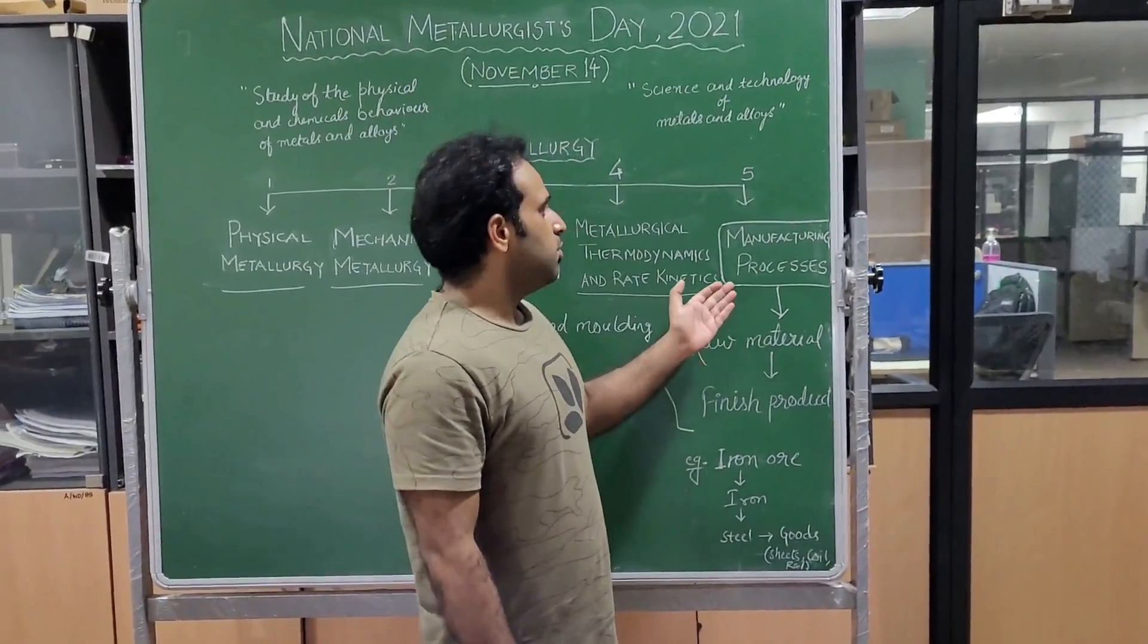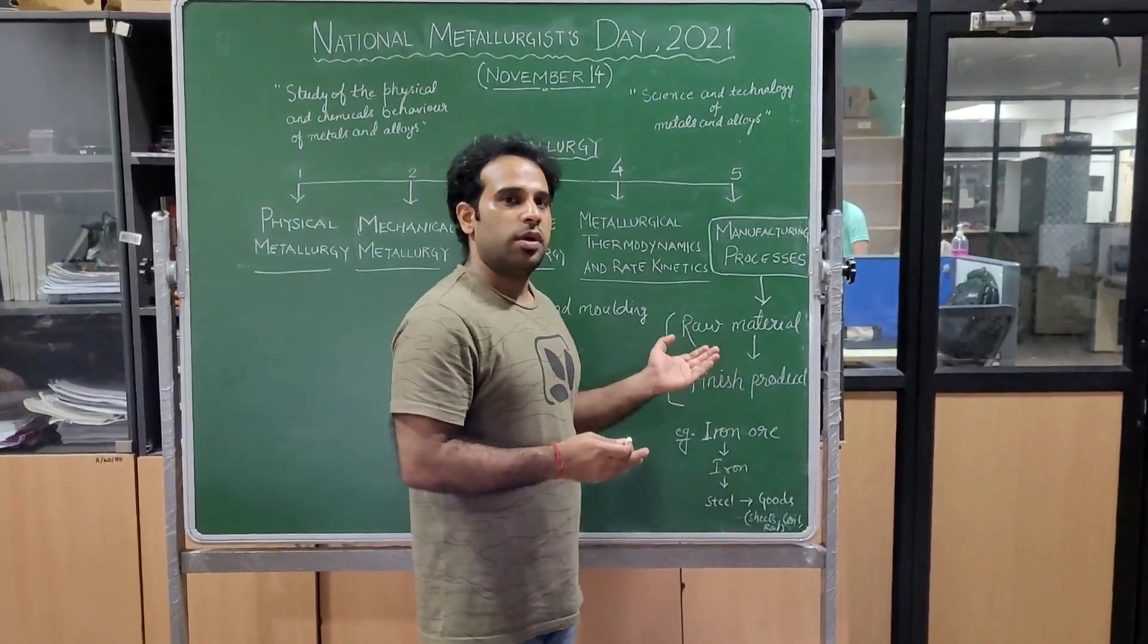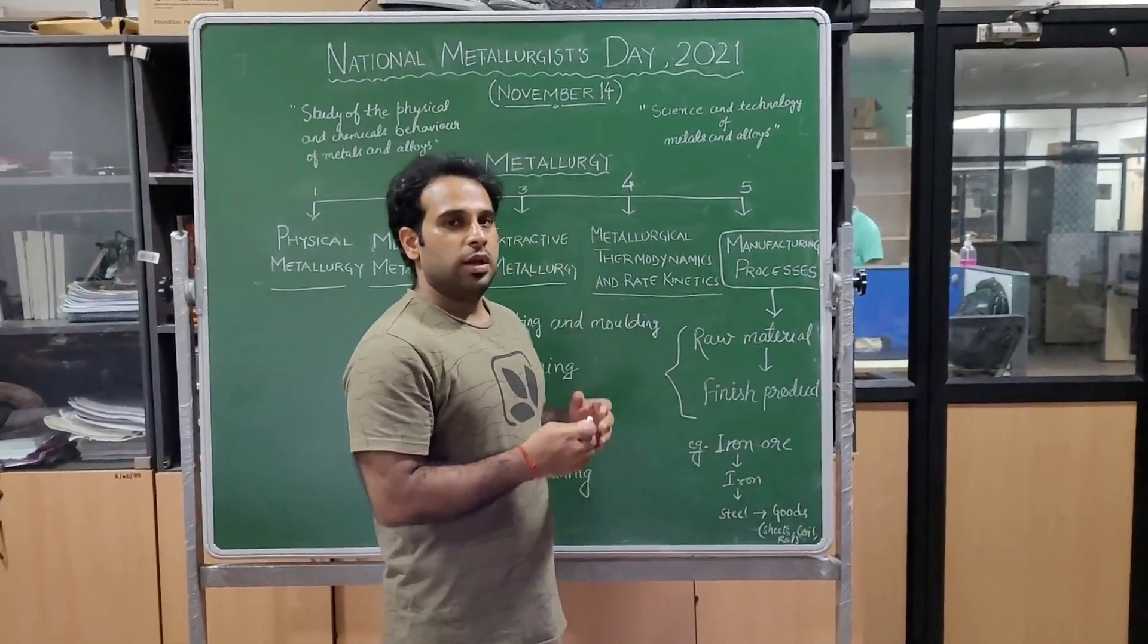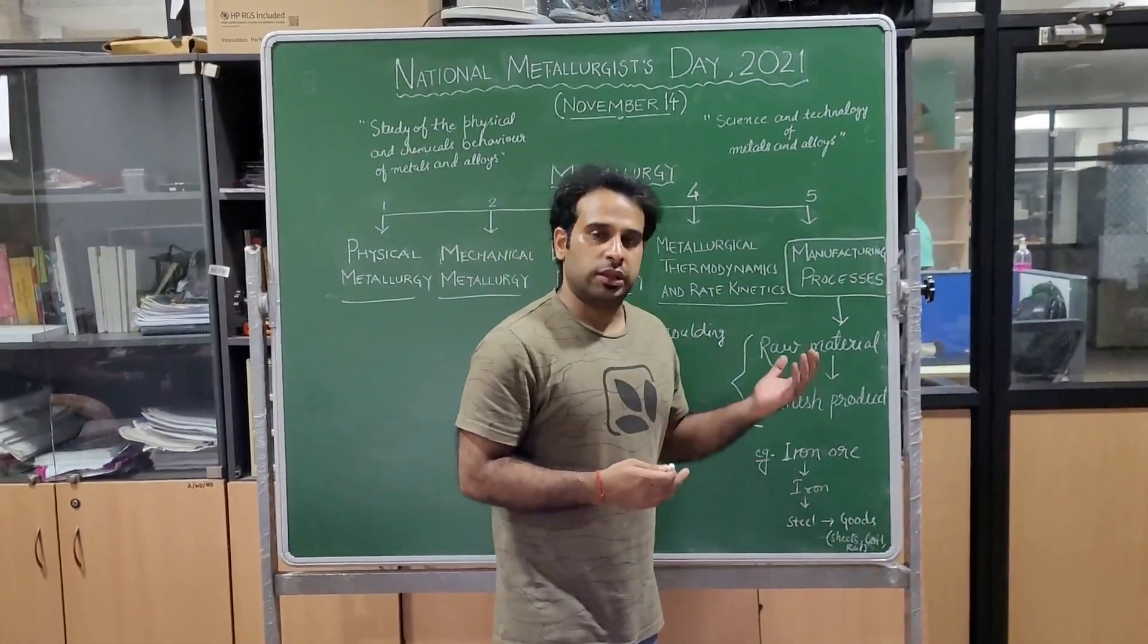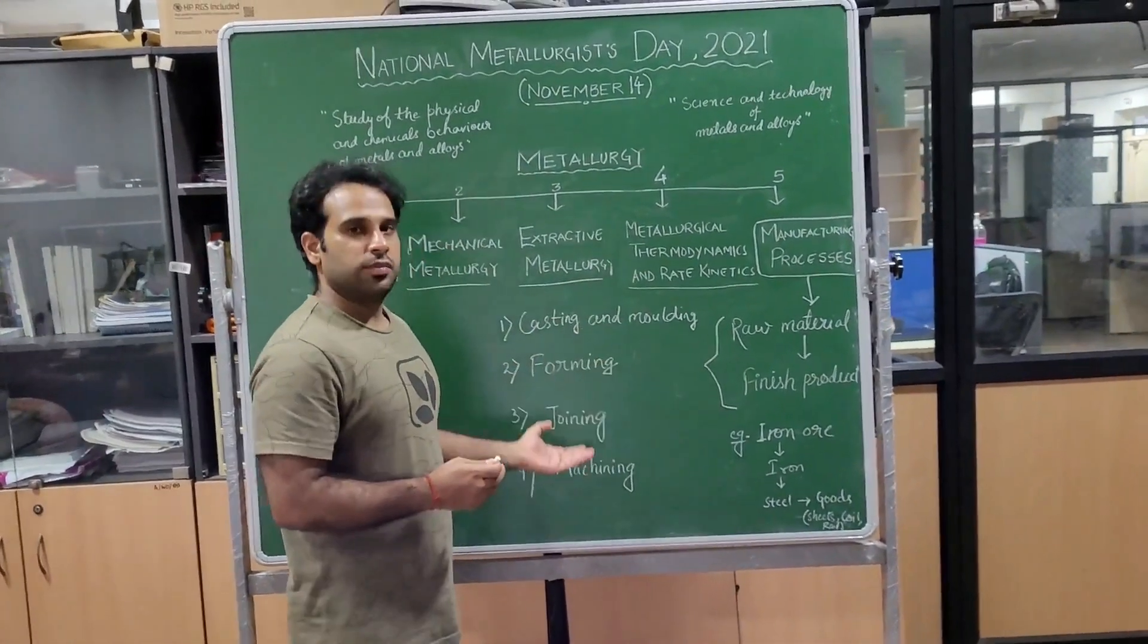Metallurgical manufacturing process is basically used to convert raw material into finished product by means of different methods, which are specified in four different manufacturing processes.